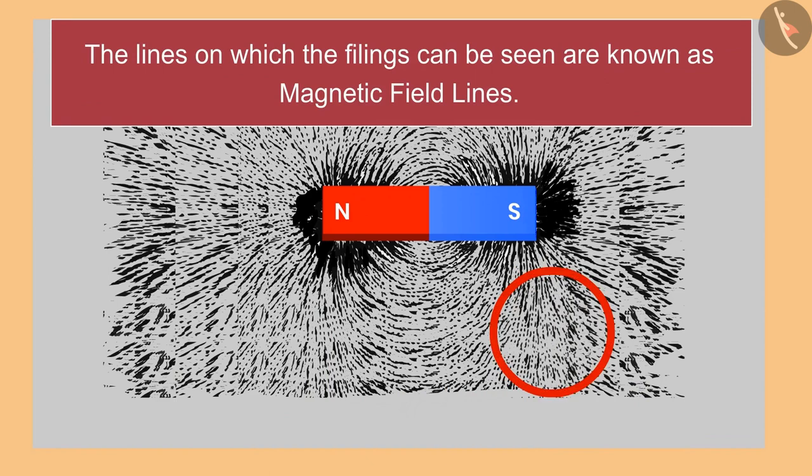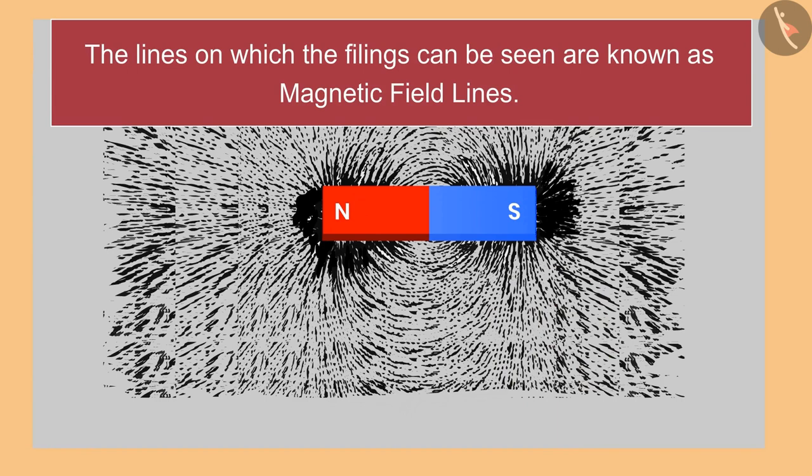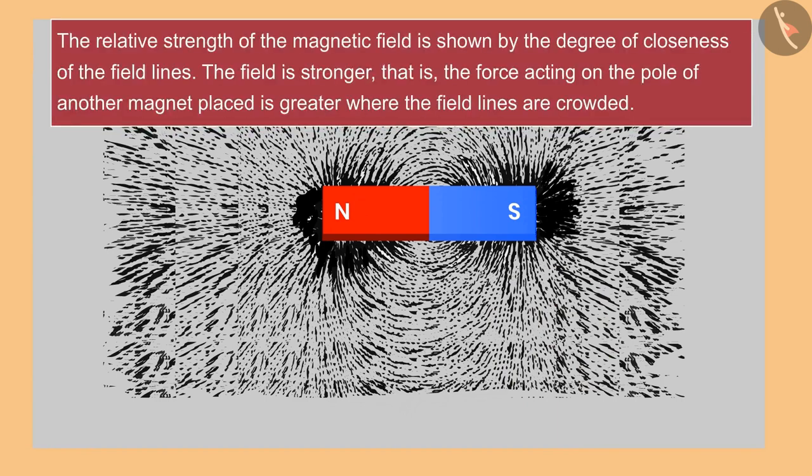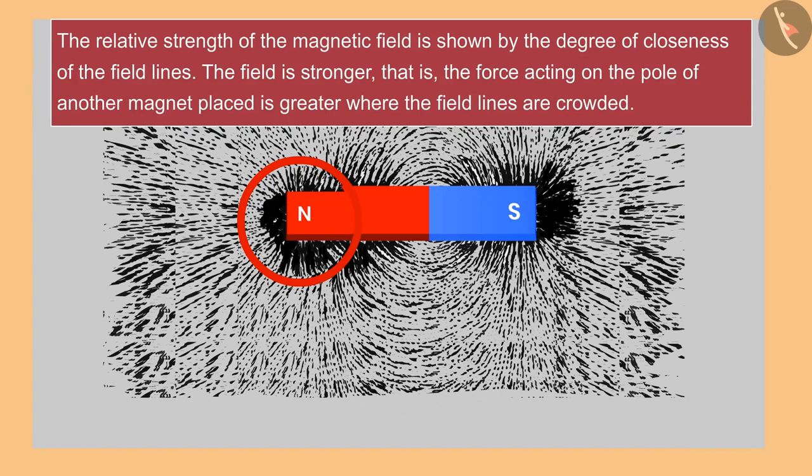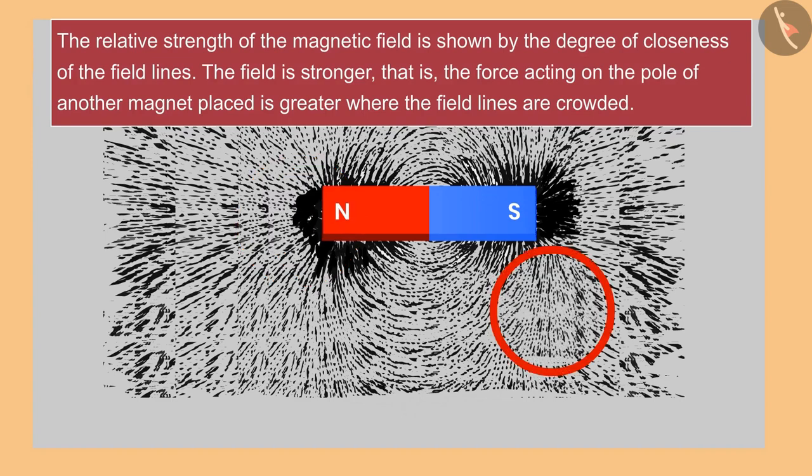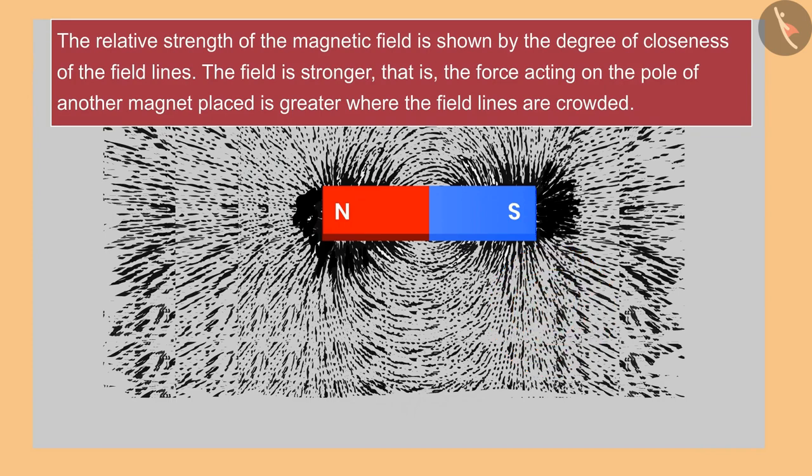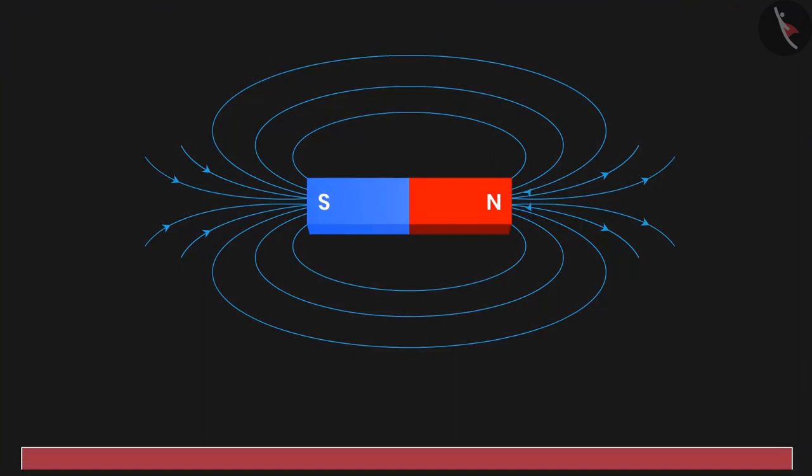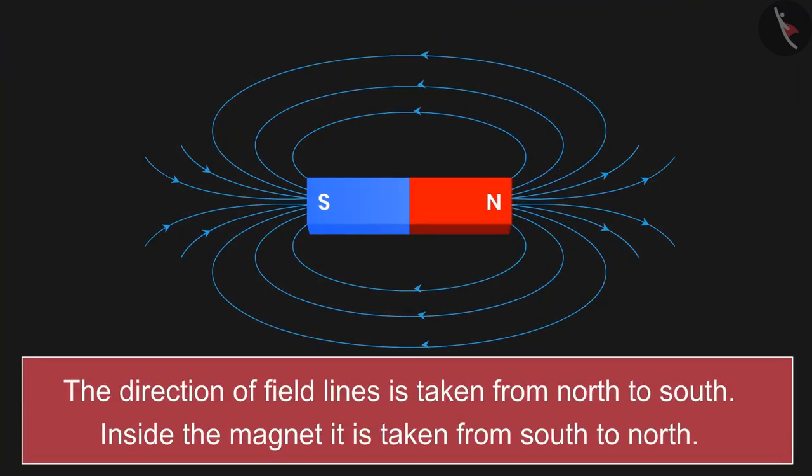If we carefully observe the iron filings, we will find that at one place they are collected very closely and at other places very less. The collection of iron filings represents the strength or weakness of magnetic field lines. According to convention, the direction of field lines is taken from the north to south. Inside the magnet, it is taken from south to north.